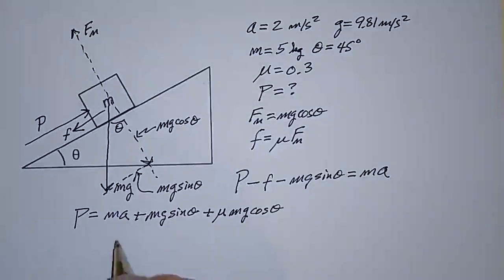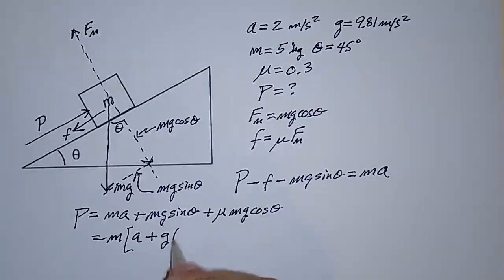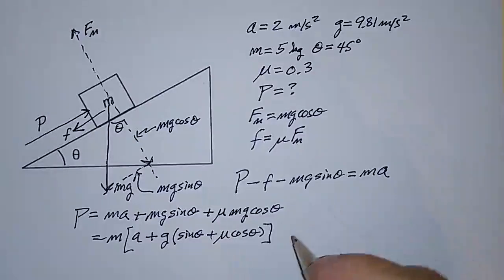I'm going to do a little bit of algebra here, just factor out a couple of things to make this a little simpler. This is equal to M times A plus, and I'm going to factor a G out of these two terms, and write this as G times sine theta plus mu cosine theta.